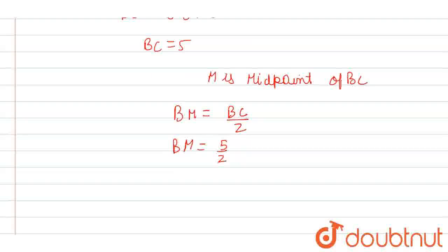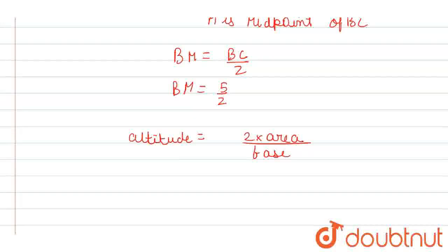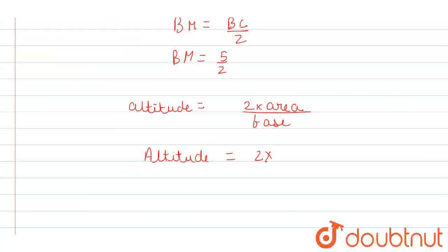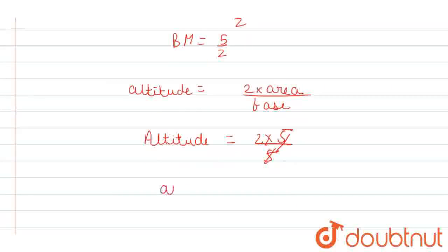Now, we will find the altitude length using the formula: altitude = (2 × area) / base. In the question, the area is given as 5 square units and we found the base as 5. So altitude = (2 × 5) / 5 = 2.